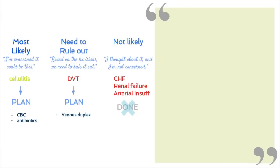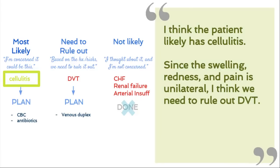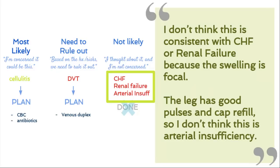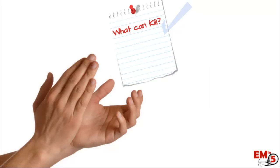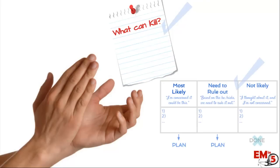Now let's go present. Out loud: 'I think the patient likely has cellulitis, but since the leg swelling and pain is unilateral and she's never had this before, I really think we need to rule out a DVT. I don't think this is consistent with CHF or renal failure because the swelling is very focal, she has no lung findings, and no cardiac history. The leg also has really good pulses and cap refill, so I don't think this is arterial insufficiency. As far as the plan, we should get a CBC and antibiotics for the cellulitis, and a venous duplex to rule out DVT.' We addressed everything on the 'what can kill' list and had a very organized assessment and plan.